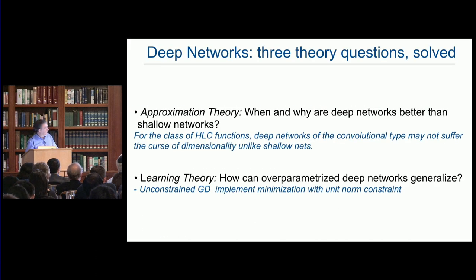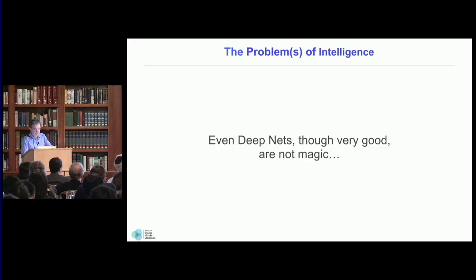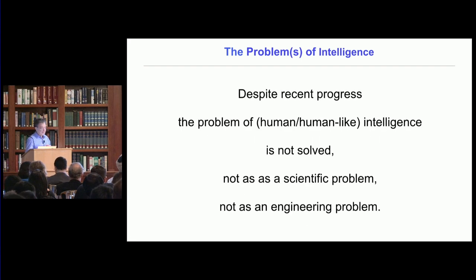So I spoke about these two things, and the main conclusion is that they are not magic deep networks. And more fundamentally, I think the problem of intelligence is a long way to be solved. So there is much more work to be done. Thank you.